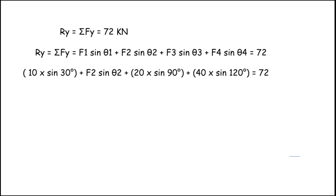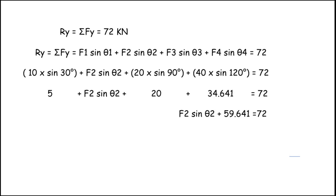Computing: 10·sin 30° = 5, 20·sin 90° = 20, 40·sin 120° = 34.641. So: F2·sin θ2 + 5 + 20 + 34.641 = 72, giving F2·sin θ2 + 59.641 = 72. Transferring: F2·sin θ2 = 72 − 59.641.